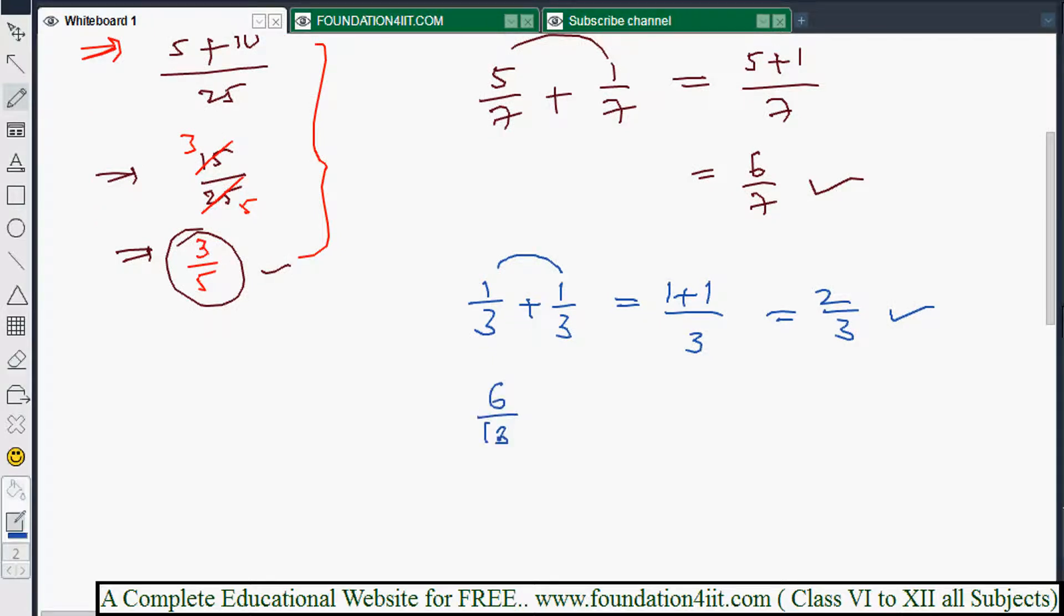Okay, 6 by 13 plus 3 by 13. Then according to our method, we need to add directly, so need not write step again. 6 plus 3 is 9. Just 13 you can keep as it is, because denominators are same. So we know denominators are same, then you can add numerators together directly and put the denominator as it is. This is the method we can do for adding fractions with like denominators.